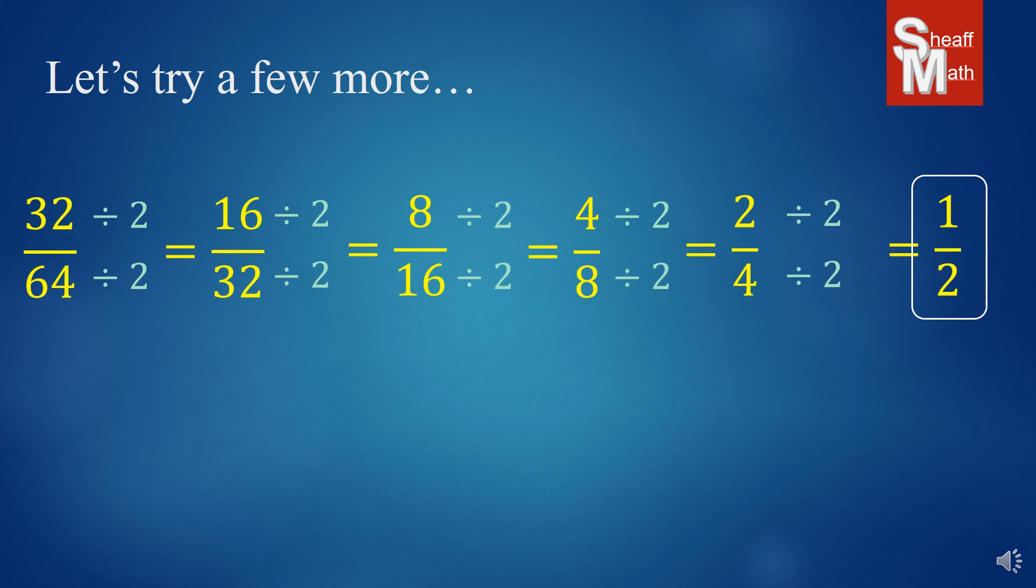Now, is there an easier way to do this? Of course, if you can think of a higher number, it's going to shorten the process. So for instance, let's say I thought, oh, I know eight goes into 32 and 64. I could have done eight over eight, gotten to four eighths.